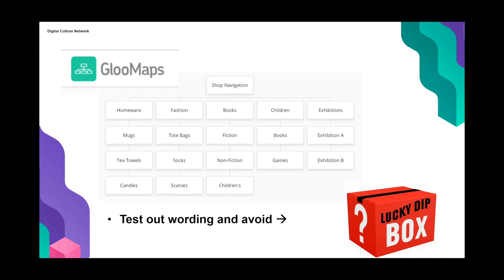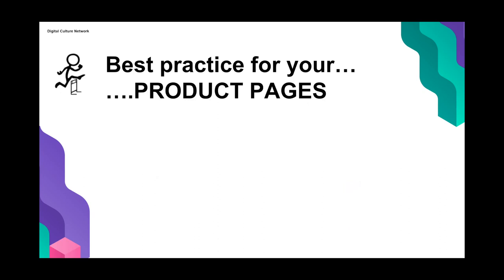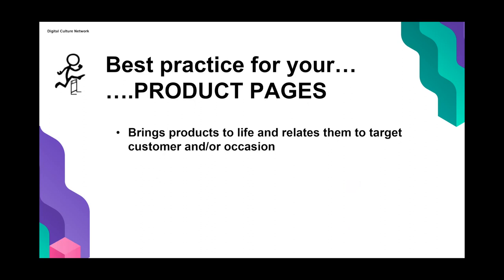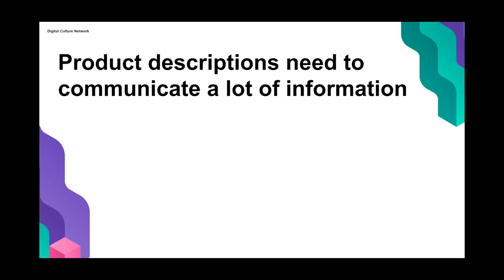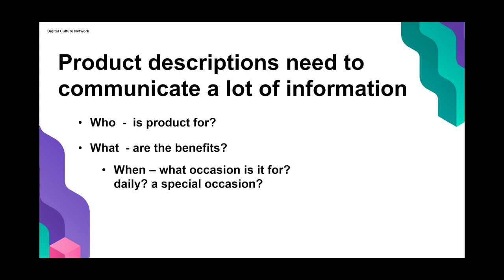Product pages really bring products to life — they relate them to our target customer or occasion and provide key factual information. We're often trying to highlight provenance, and as arts and cultural organizations we often have products with quite a lot of story behind them. Product descriptions need to communicate quite a lot: who is this product for, what are the benefits, when and what occasion is it for, where might it be used, and how does it work.